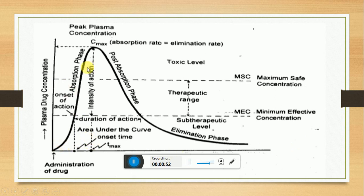From this curve, various parameters are obtained: peak plasma concentration, Tmax, area under the curve, duration of action, onset of action, intensity of action, maximum safe concentration, minimum effective concentration, toxic level, and therapeutic range. All these things are obtained from this curve.